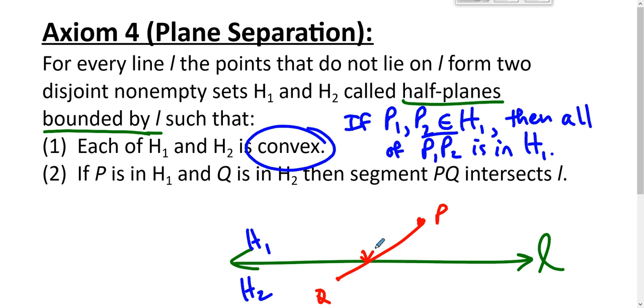A little bit of vocabulary. We would say that points P and R are on the same side of L. We would say that the points Q and P are on opposite sides of L.